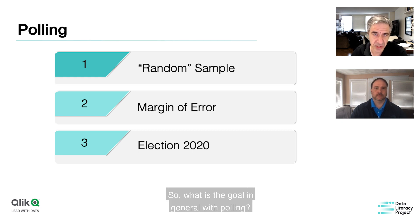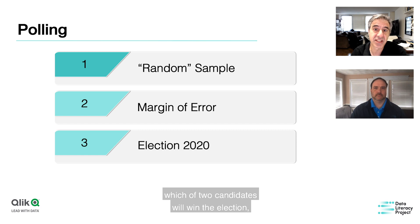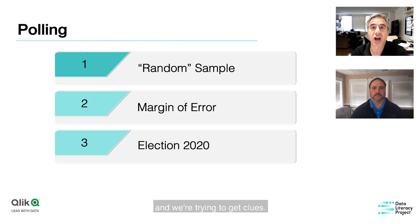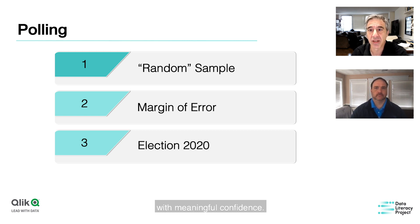What is the goal in general with polling? We're trying to assess the probability of something happening — which of two candidates will win the election. We're trying to get clues. But how many and what type of clues can give us a reasonable estimate with meaningful confidence?